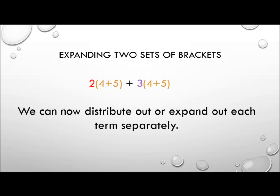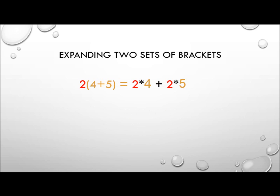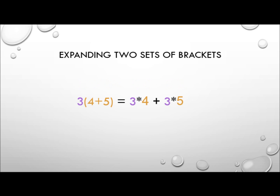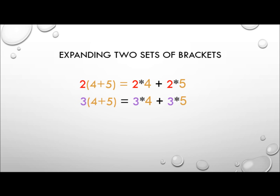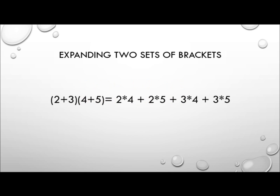We can now expand out each term separately. Taking 2(4+5) gives us 2×4 + 2×5. Taking 3(4+5) gives us 3×4 + 3×5. Combining the two gives us 2×4 + 2×5 + 3×4 + 3×5, which is (2+3)(4+5) in its fully expanded form.